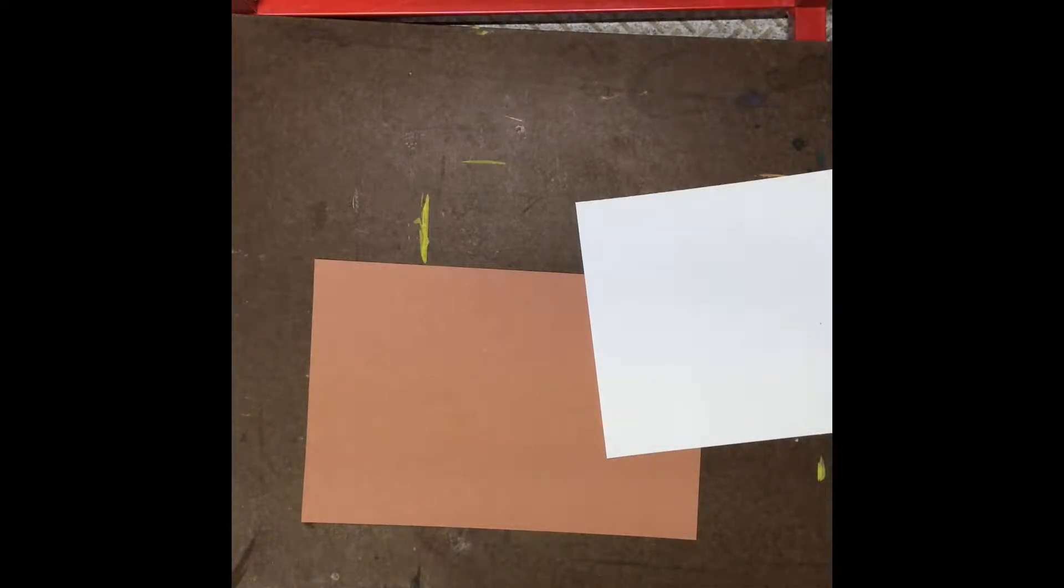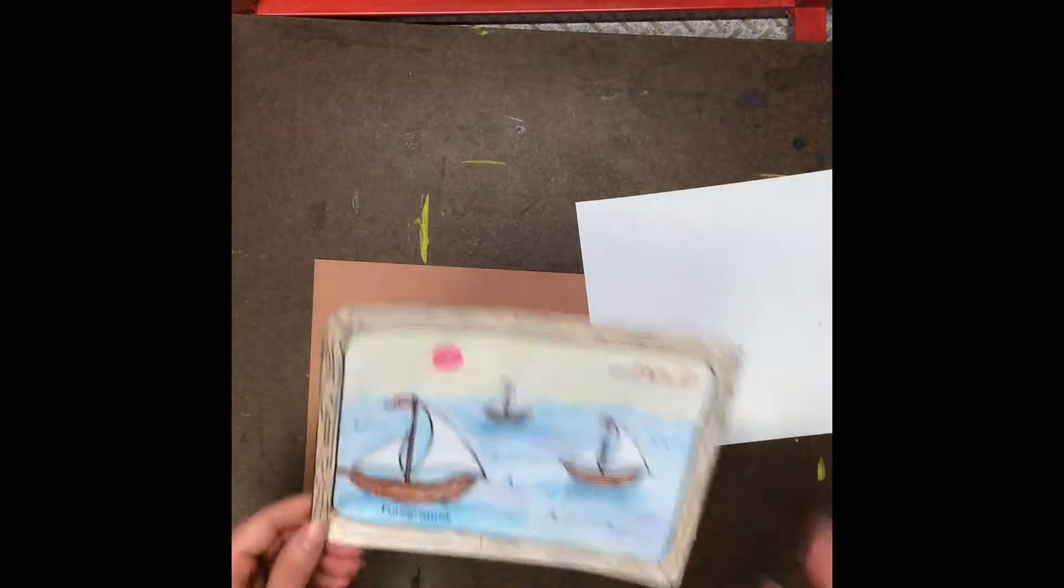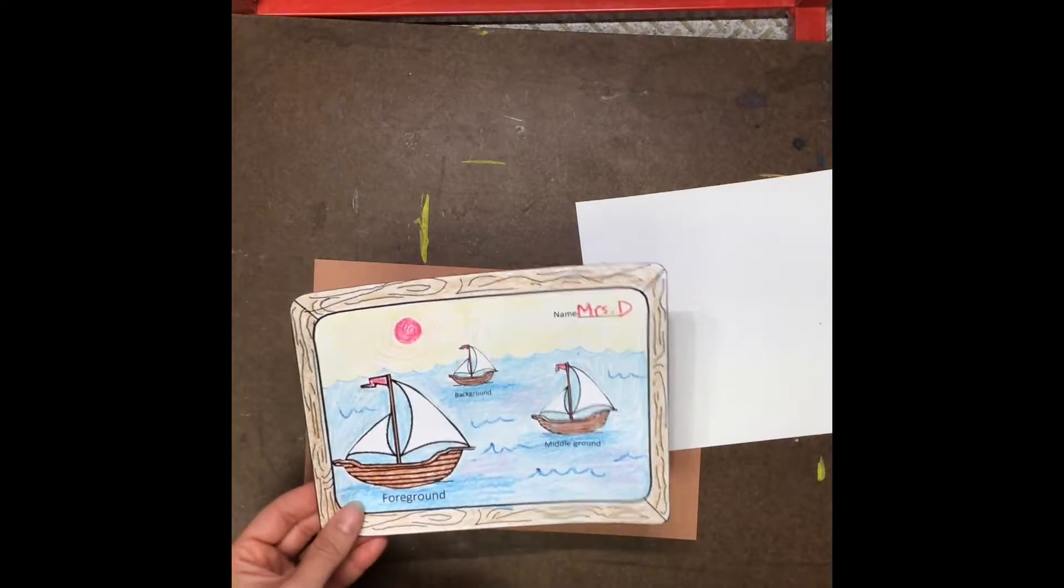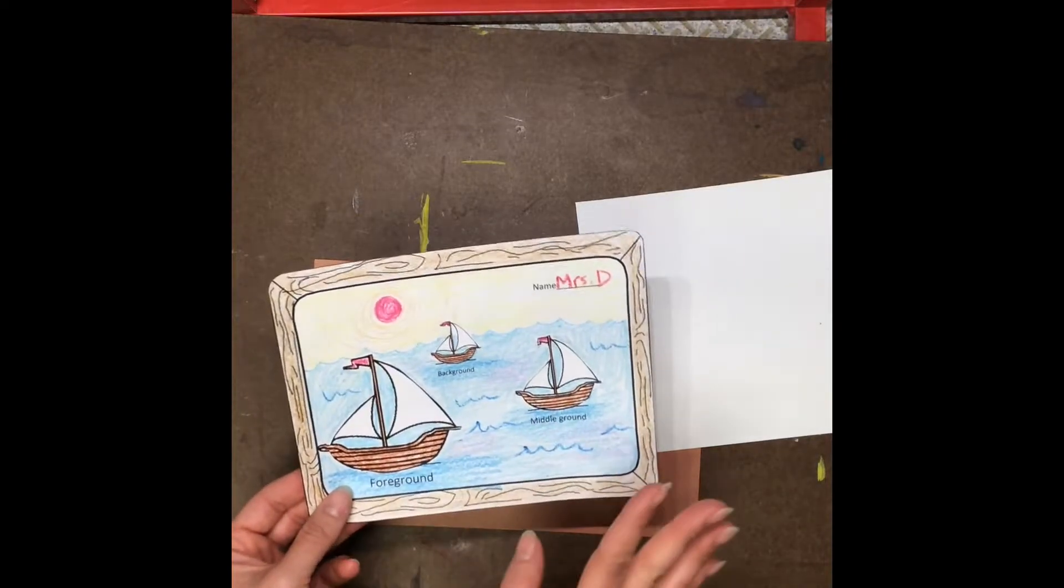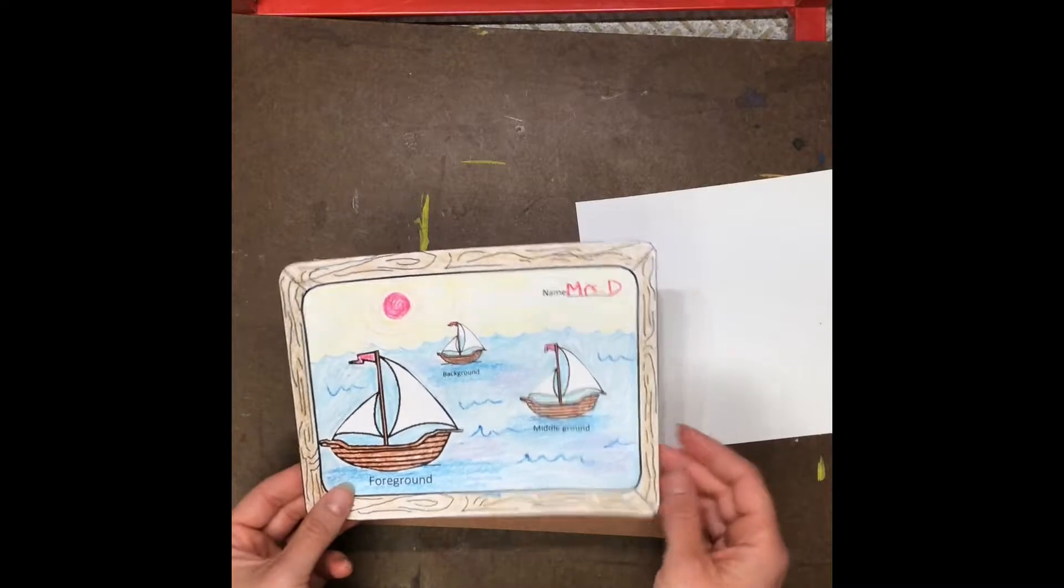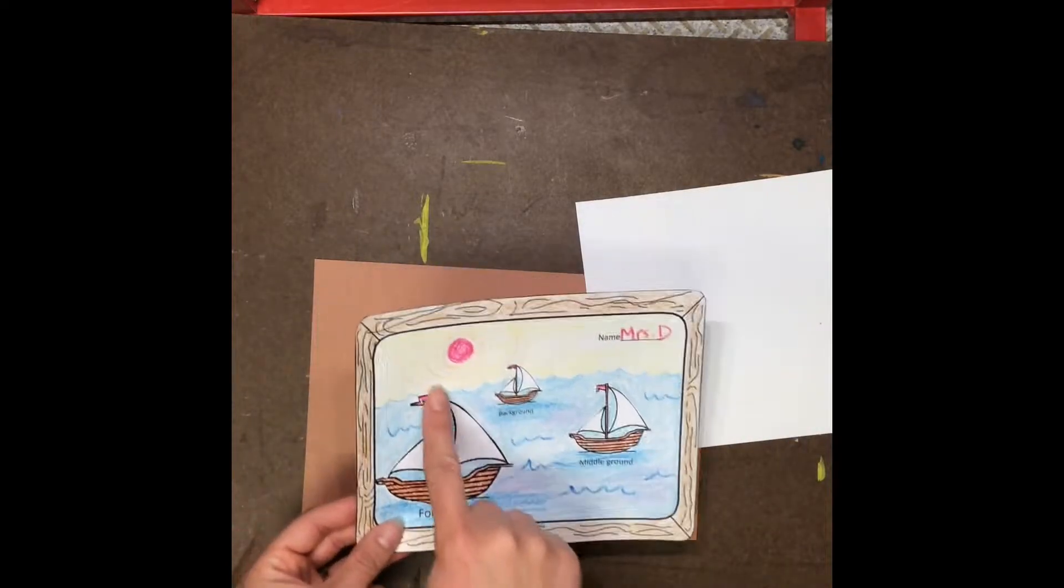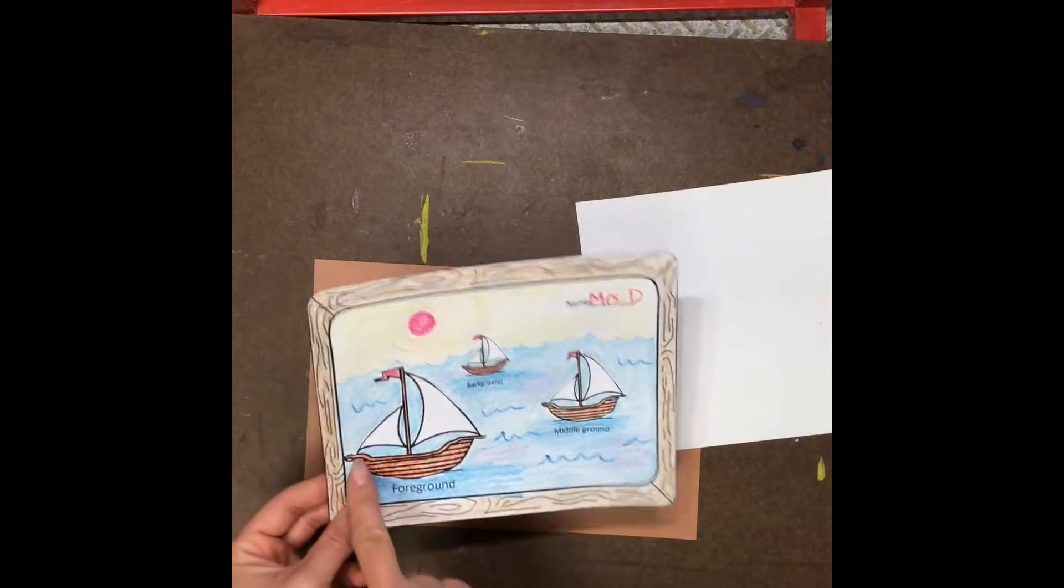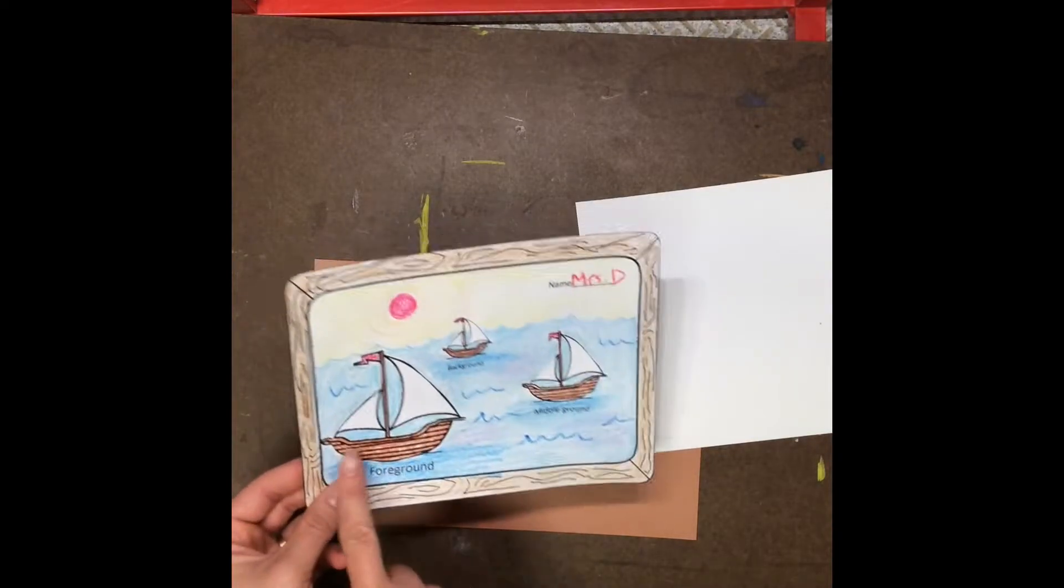Today we're going to make a big boat, a medium boat, and a small boat for our seascape art project. I'm getting ideas about how to make boats from our practice worksheet that we did last time. So I see that sailboats have some basic shapes. A triangle would be a good shape for the sail and a semicircle would be a good shape for the boat part.